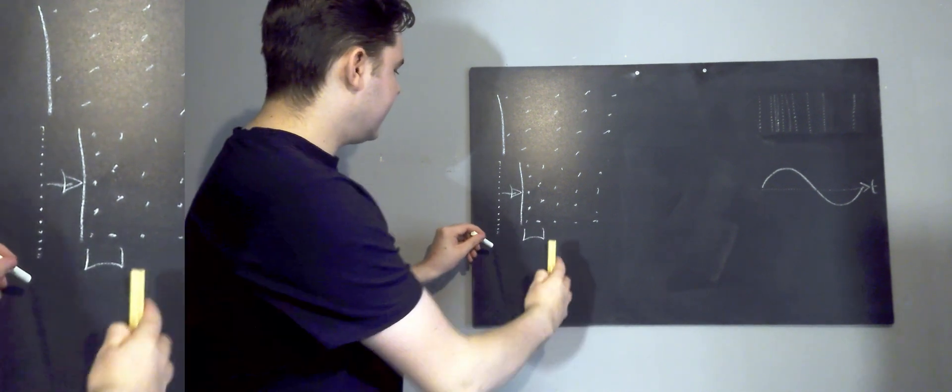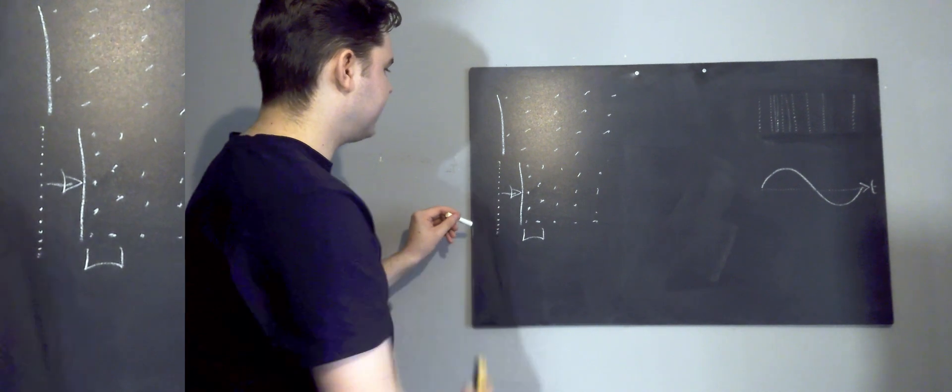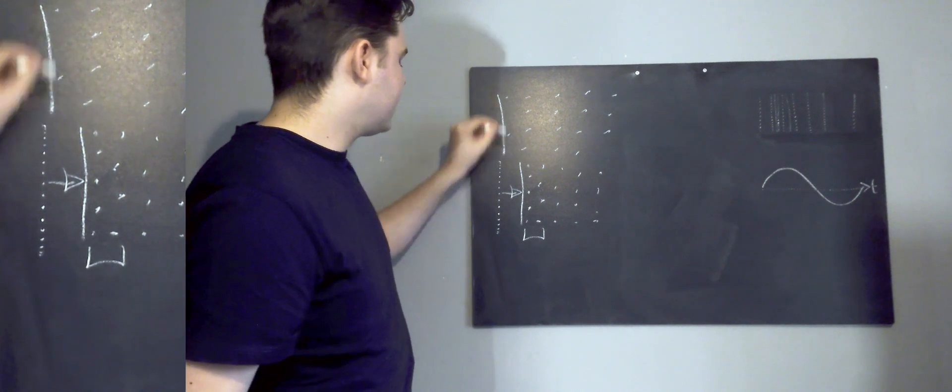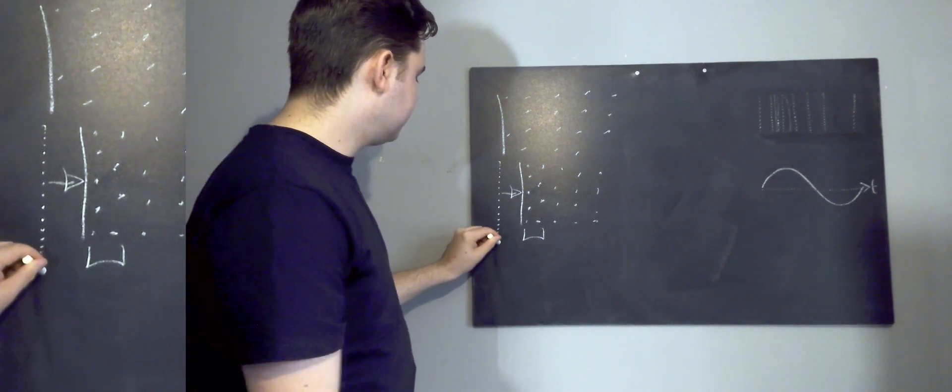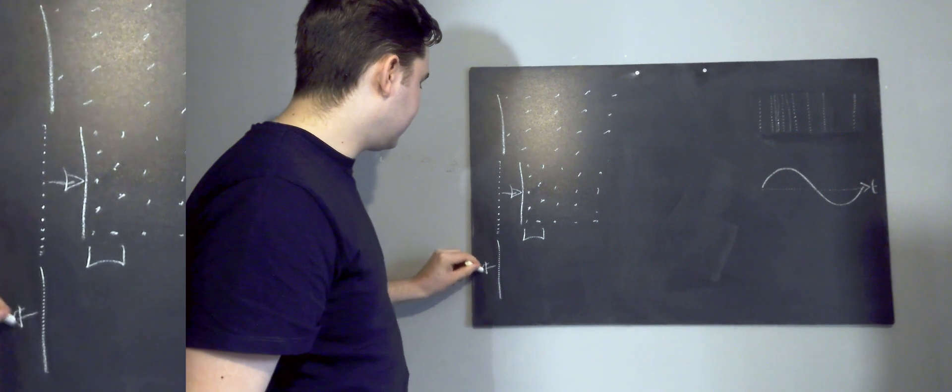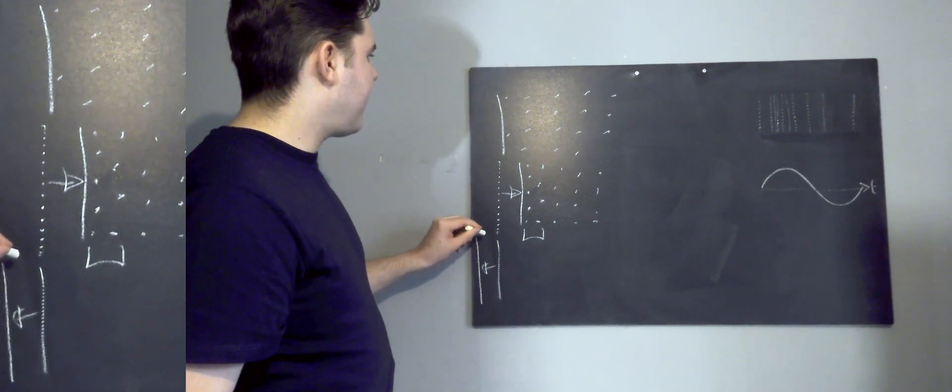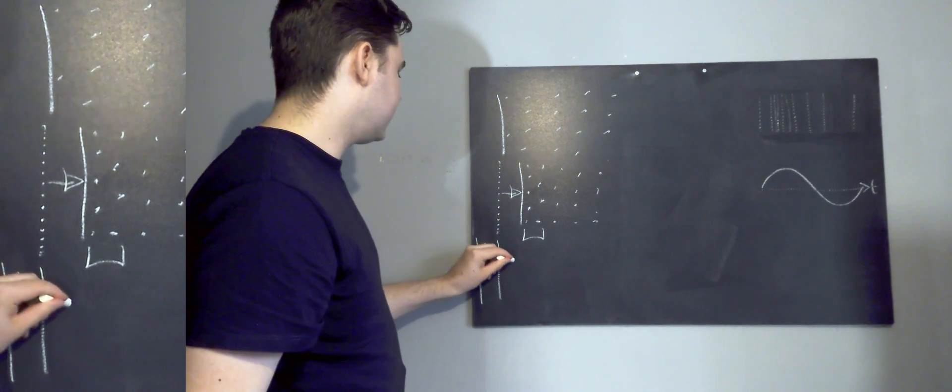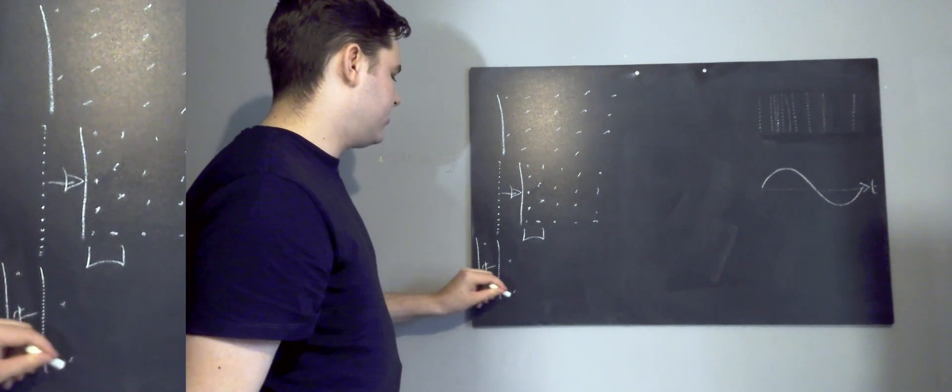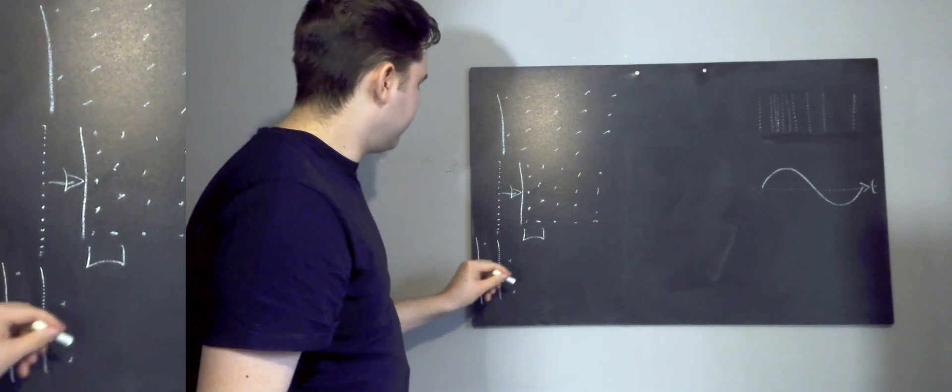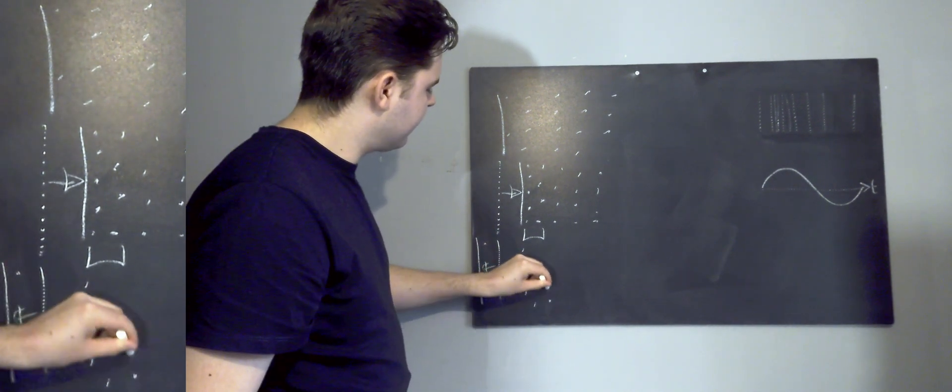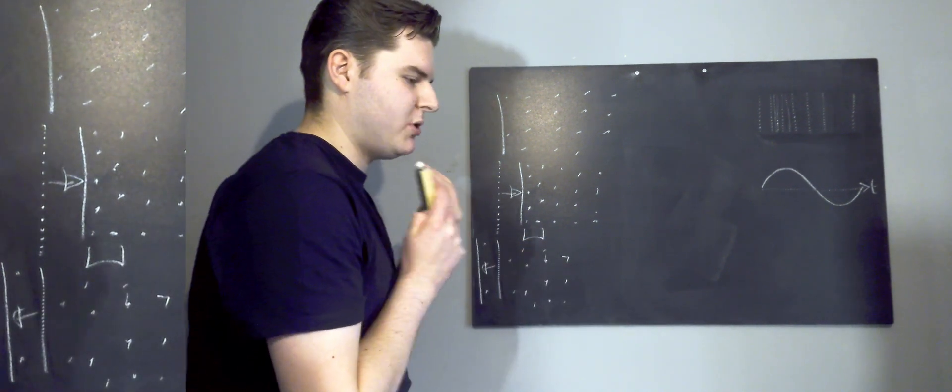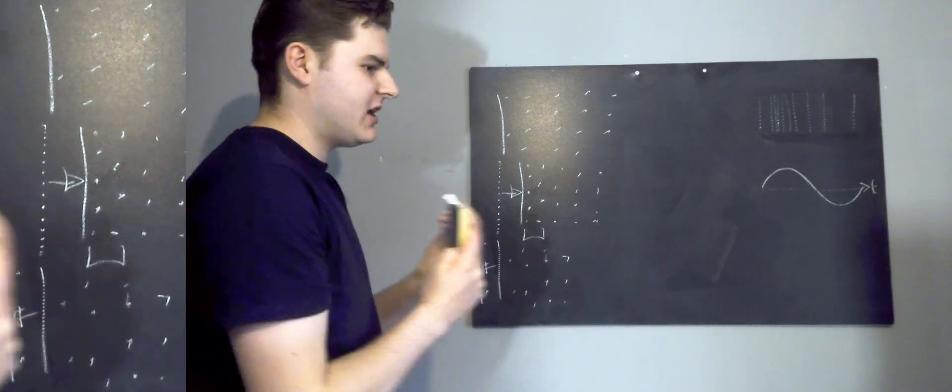And then what happens if it then goes back to its stationary position? We then get our relatively even distribution again. But if it goes behind that, we now have lower than atmospheric pressure, and we end up with a sparser distribution of particles within that given area. Okay. And it's just like that, pushing the particles together, pulling them apart.